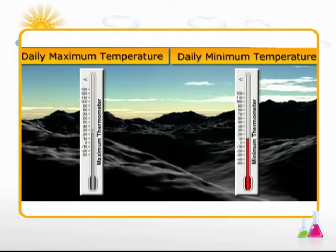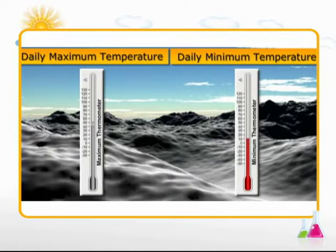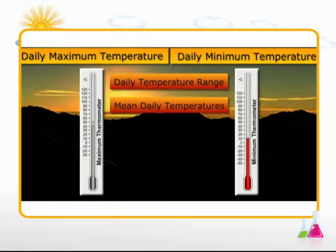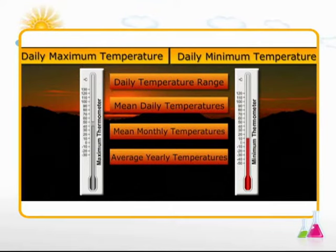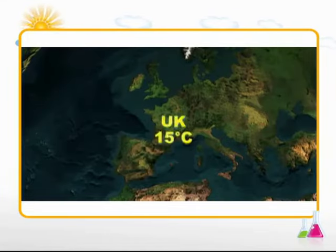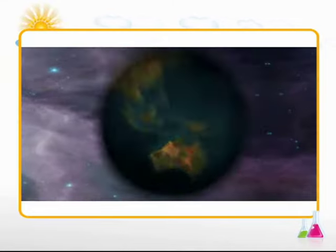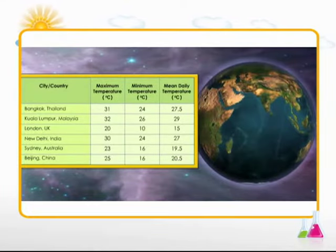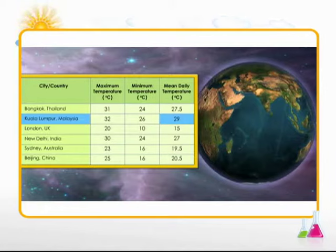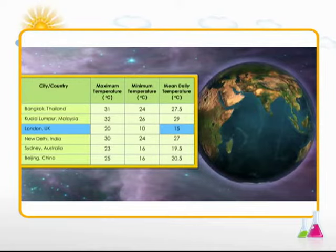The daily maximum and minimum temperatures for a place are used to calculate the daily temperature range, mean daily temperatures, mean monthly temperatures, average yearly temperatures, and annual temperature range. The mean daily temperatures of different places help compare temperatures on any given day. For example, a table shows that Kuala Lumpur has the highest mean daily temperature while London has the lowest mean daily temperature on that day.